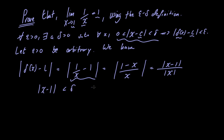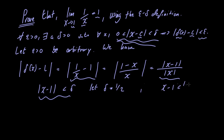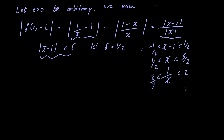We let delta equal 1 half and try to find an upper bound for 1 over the absolute value of x. With delta equal to 1 half, we have x minus 1 is less than 1 over 2 and greater than minus 1 over 2. Adding 1 to both sides gives x is less than 3 over 2 and x is greater than 1 over 2. Taking the reciprocal, 1 over x is less than 2 and greater than 2 over 3, so 1 over the absolute value of x is less than 2.